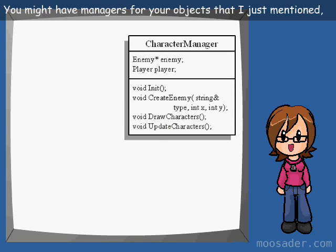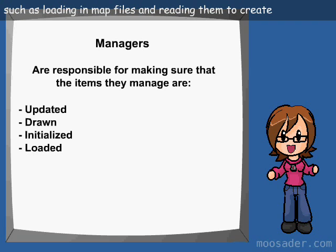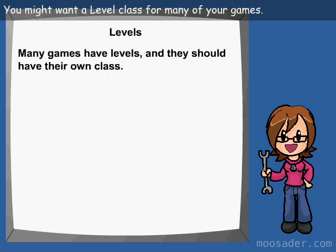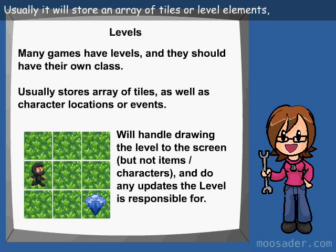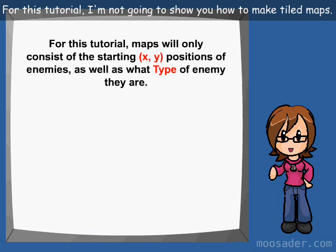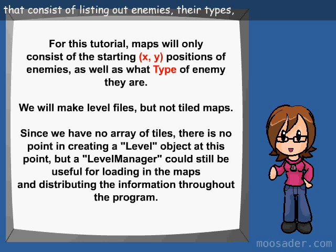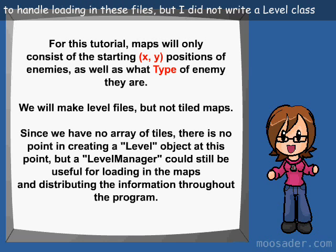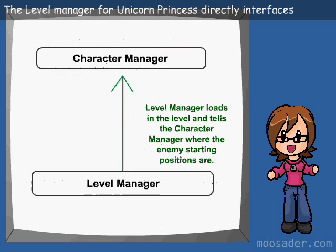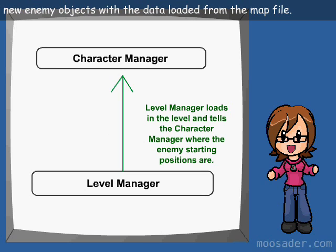You might have managers for your objects, as well as images, sounds, and levels. They handle making sure everything gets updated and drawn every cycle, as well as initializing the entities or other actions such as loading in map files and reading them to create new level objects. You might want a level class for many of your games — usually it will store an array of tiles or level elements and handle drawing them and updating parts in the level. For this tutorial, I am not going to show you how to make tiled maps, but I might in a future one. I am going to start out with creating level files that consist of listing out enemies, their types, and a starting position in the level. The level manager for Unicorn Princess directly interfaces with the character manager to instruct it to create the new enemy objects with the data loaded from the map file.